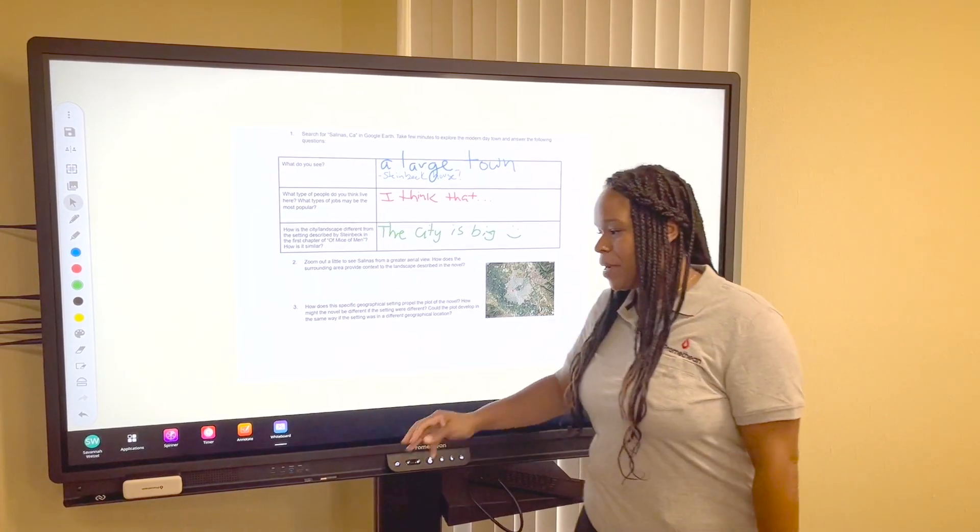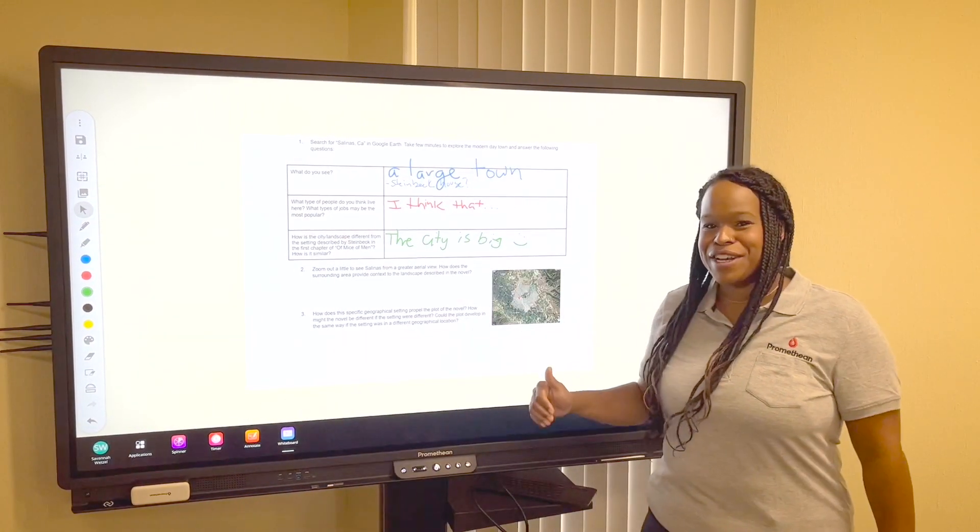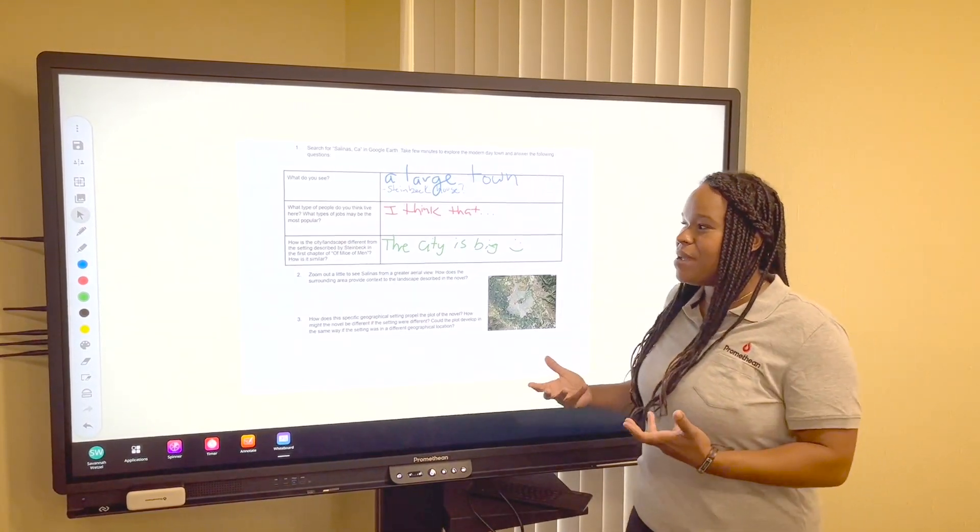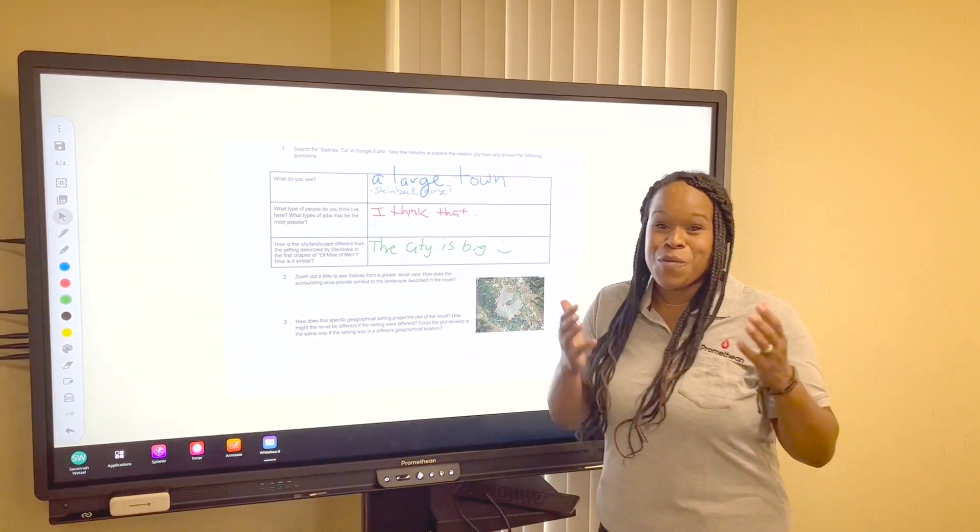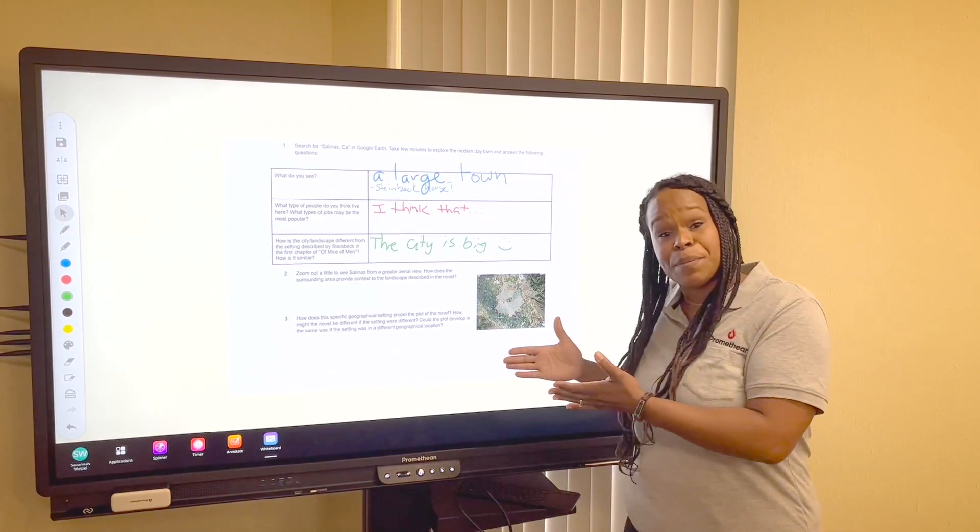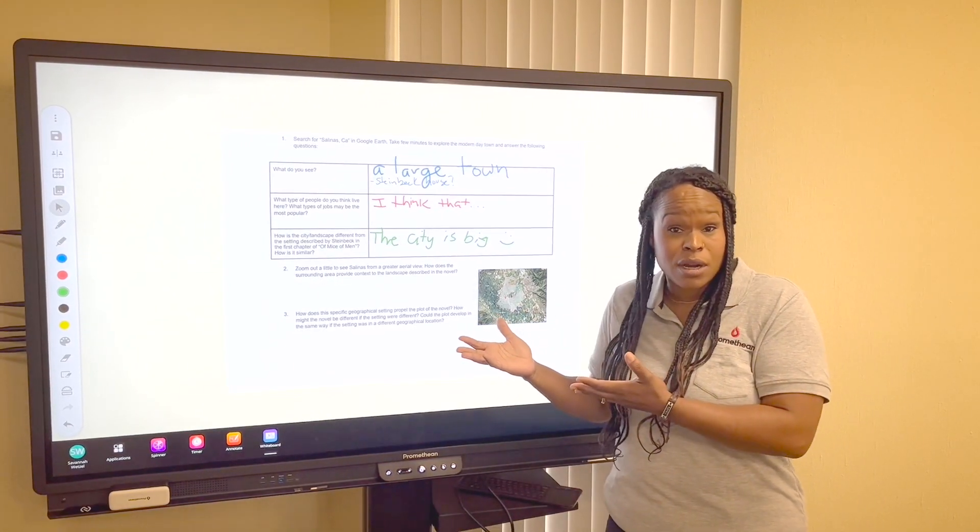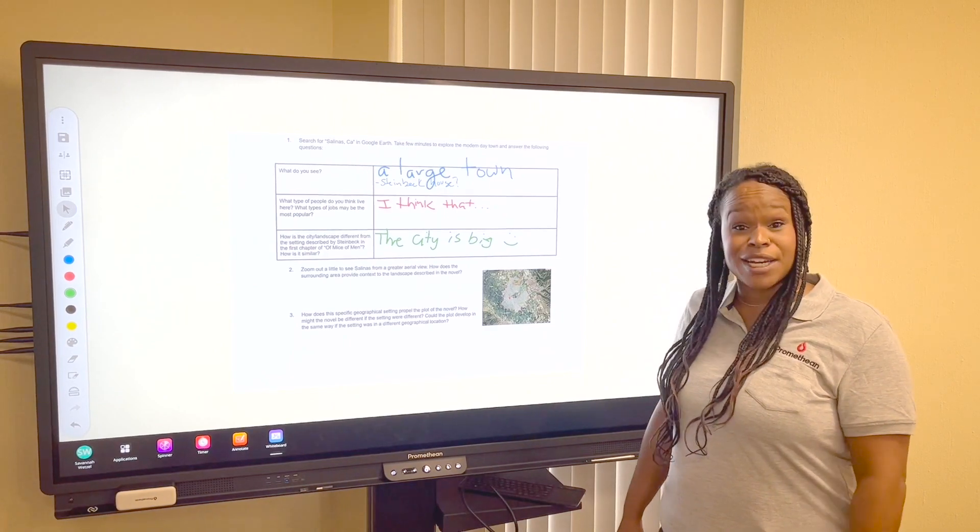So I've accessed my whiteboard simply by going to my applications and finding the whiteboard app. Now that I'm here, I've worked with my students and we've created a wonderful graphic organizer with lots of notes, but I want to save this so that I have the potential to either share with a co-worker or keep it in my files to look at it another time.